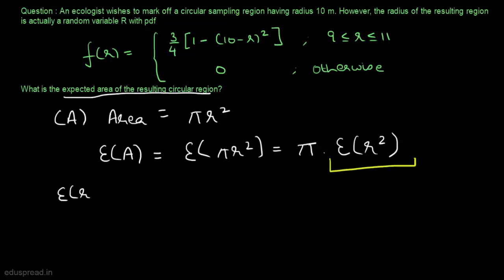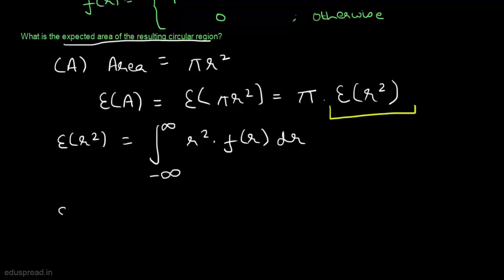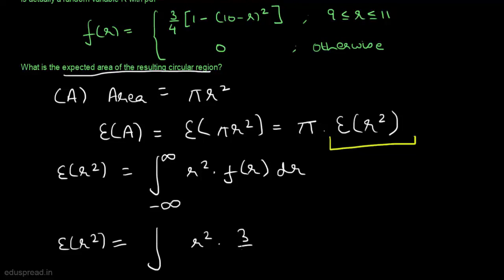We know that the expected value of r² is equal to the integration of r² multiplied by the PDF of r, dr, integrated from minus infinity to infinity. In this question, we are given that f(r) equals a specific expression, so the expected value of r² is equal to the integration of r² multiplied by (3/4)·(1 minus (10 minus r)²), integrated from 9 to 11.